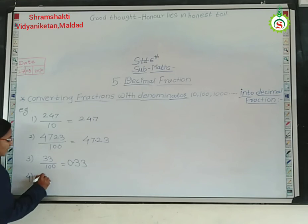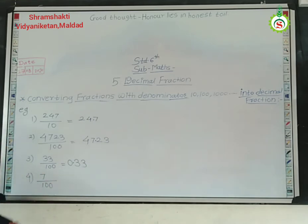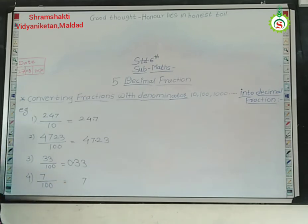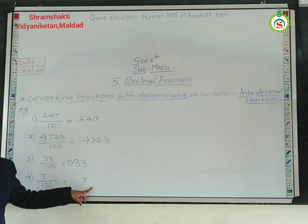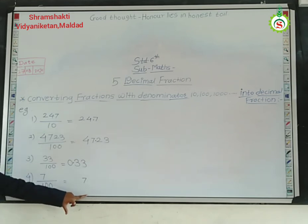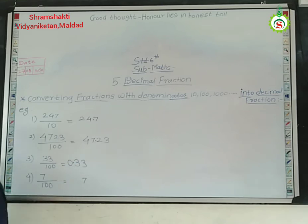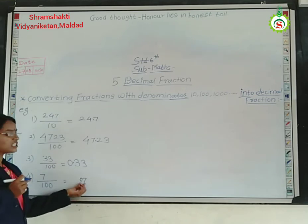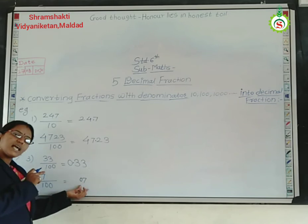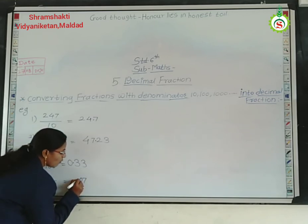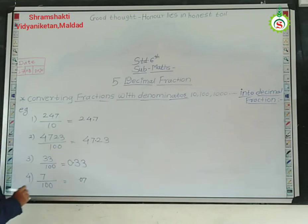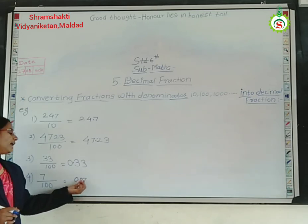Next example: 7 upon 100. Write down the numerator value 7 as it is. How many zeros are there? Two zeros. But here there is only one digit at the numerator. So in such a case you have to add a 0 before 7, making it a two-digit number — 07 — whose value remains 7. Now leave two places, give the point in front, and write down 0 before it. So we get 0.07.